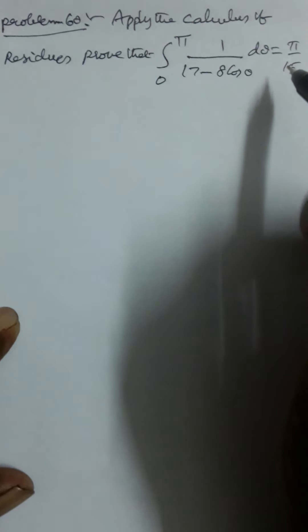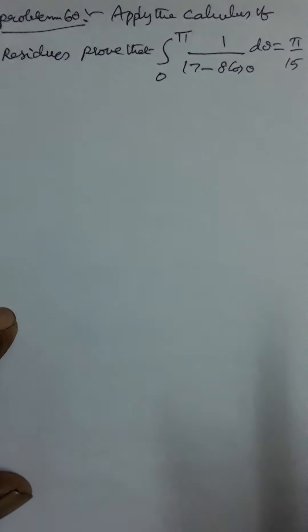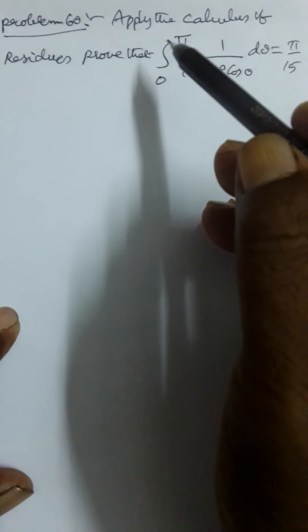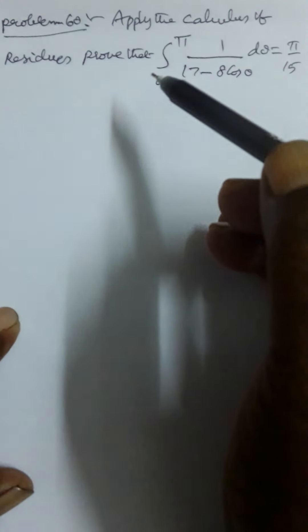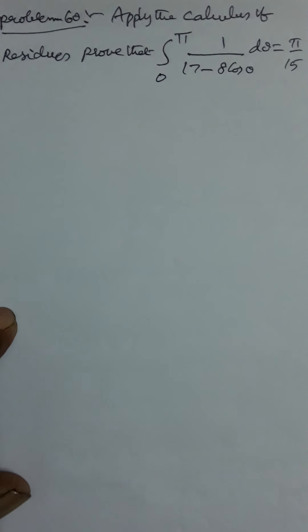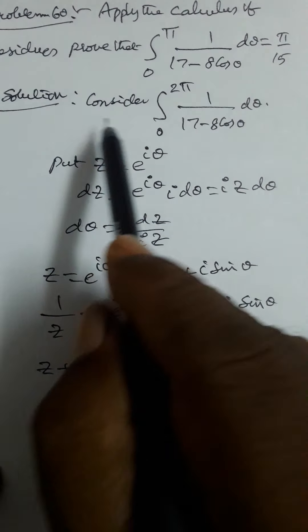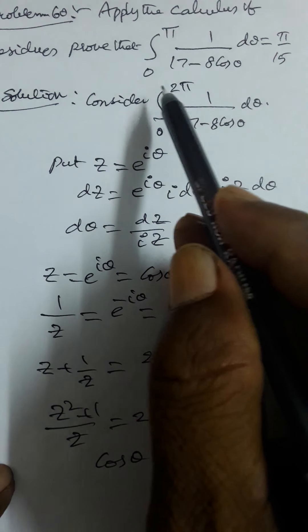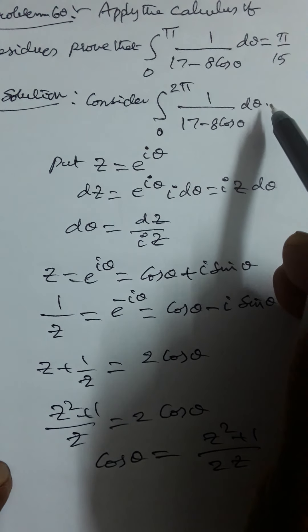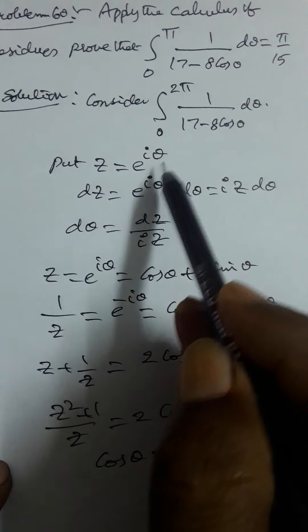Problem 60: Apply the calculus of residues to prove that the integral from 0 to π (not 2π) of 1/(17 − 8 cosθ) dθ = π/15. Use the same methodology — first consider 0 to 2π and do the problem.